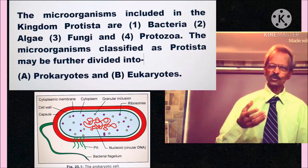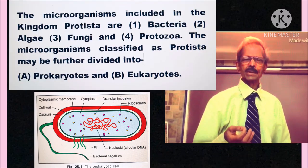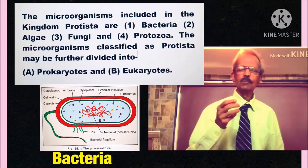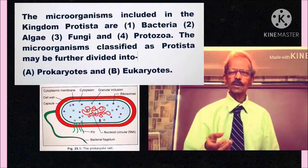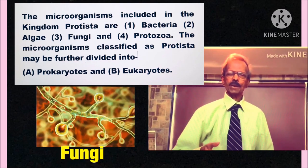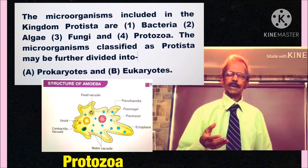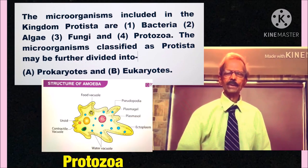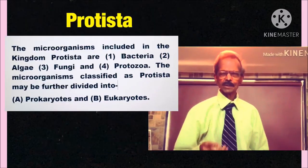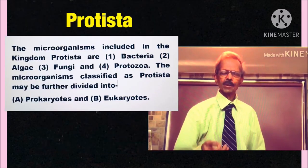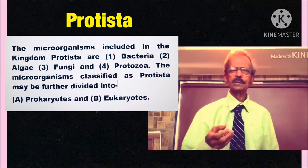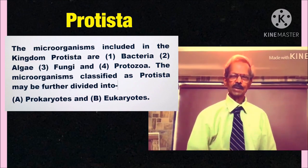The microorganisms included in the kingdom Protista are bacteria, algae, fungi and protozoa. The microorganisms classified as Protista may be further divided into prokaryotes and eukaryotes.